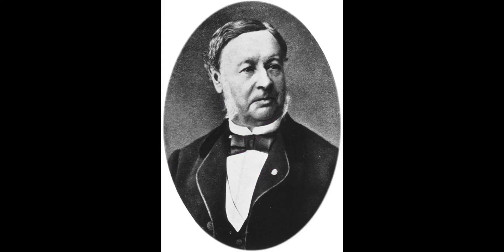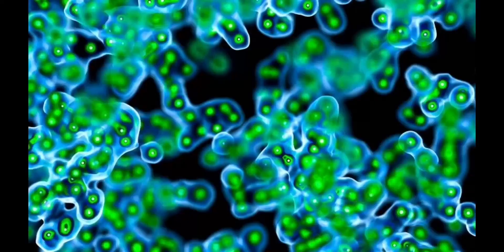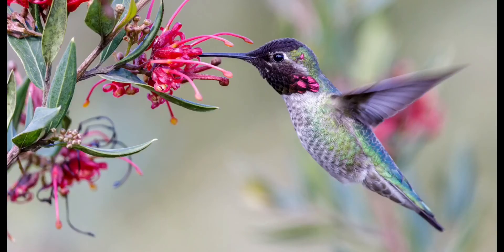A third part of the cell theory is based on the work carried out by the German scientist Theodor Swann. His work led him to propose that the cell is the smallest functioning unit of life. Anything smaller than a cell cannot live independently.